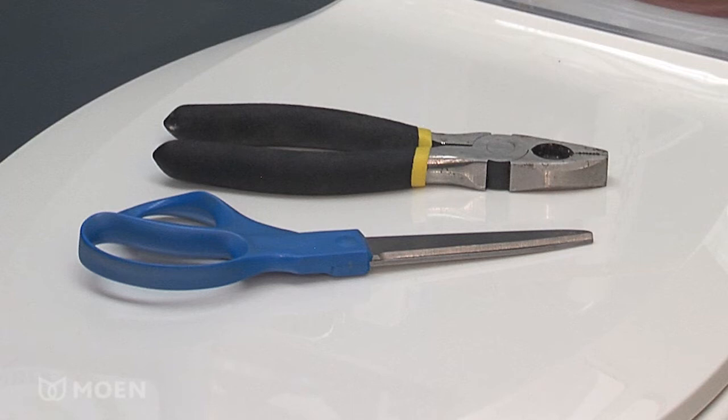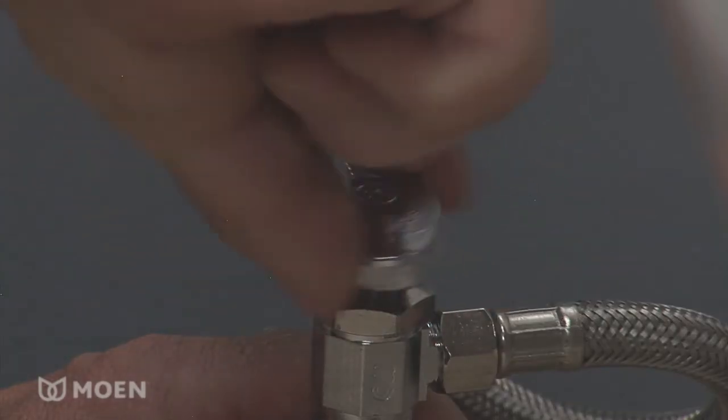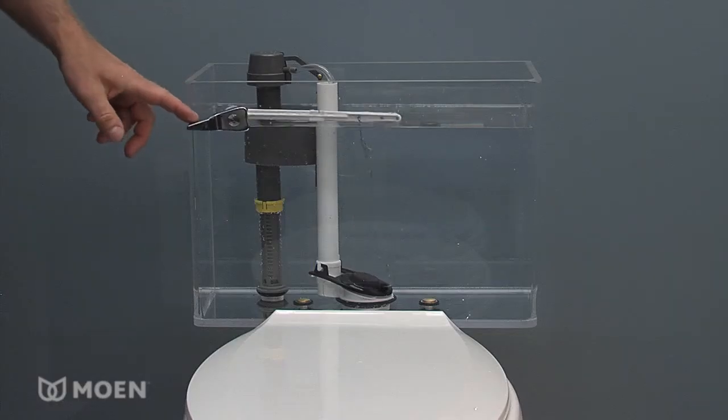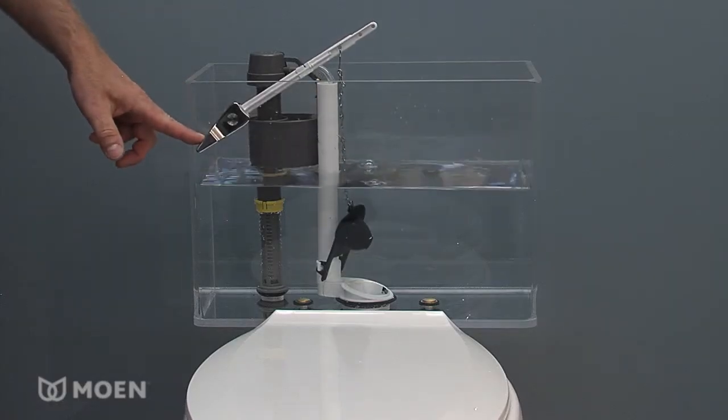You will require a pair of scissors and pliers before getting started. To begin the quick and easy installation, turn the water supply off and flush to drain the water from the tank, removing as much water as possible.